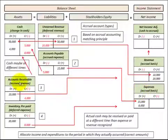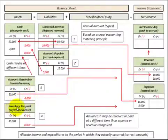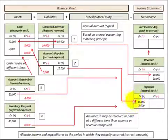For accounts receivable, this is where we recognize revenue prior to receiving any payments, so at the time that we earn the revenue, we recognize it as a revenue on the income statement. For inventory and prepaid expenses, this is where we purchase inventory in advance, and then when we use it, we recognize it as an expense on our income statement.